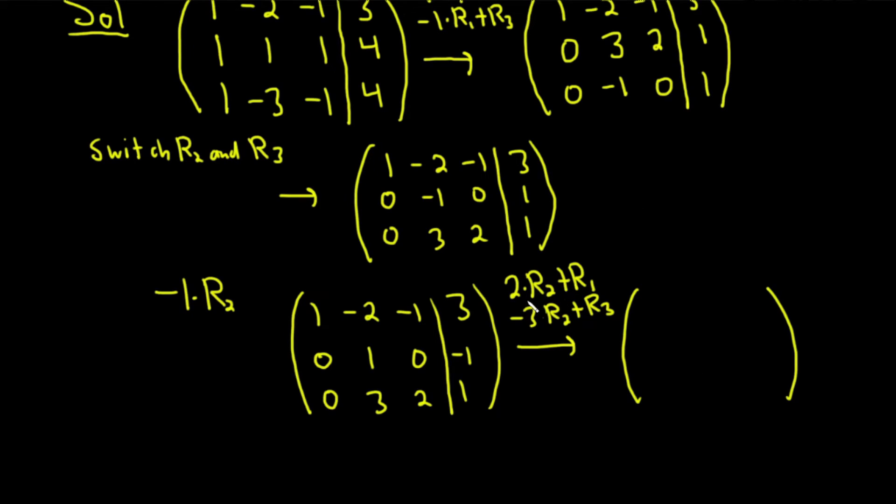So we're doing the first operation now. 2 times row 2 plus row 1. 0 plus 1 is 1. 2 plus negative 2 is 0. 0 plus negative 1 is negative 1. Negative 2 plus 3 is 1. Again, 0 plus 1 is 1. 2 plus negative 2 is 0. 0 plus negative 1 is negative 1. Negative 2 plus 3 is 1. Keep row 2 the same.